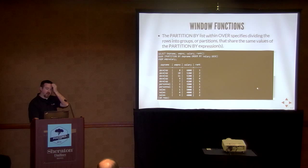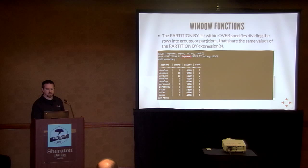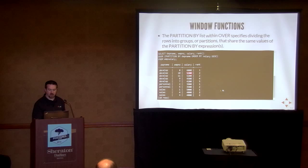Window functions also support ranking. You partition by department name, order by salary, and get a ranking of salaries per department. If there's a tie, it keeps the same number and skips the next one — so first place is $6,000, second and third place are both labeled two at $5,200. If you're using ranking, just be careful with ties — it's a ranking, not a running row count.